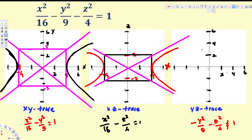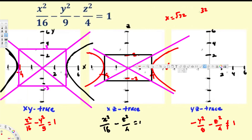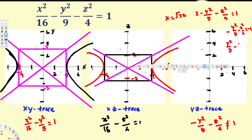Instead, we take a parallel plane. Setting x equal to √32 and plugging in gives 32 over 16 = 2, so 2 minus y² over 9 minus z² over 4 equals 1. Moving the 2 to the other side: y² over 9 plus z² over 4 equals 1 (after multiplying by negative one). This is an ellipse, and this is what we'll use to draw the trace.